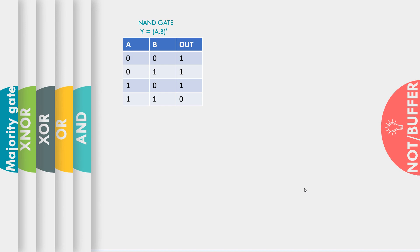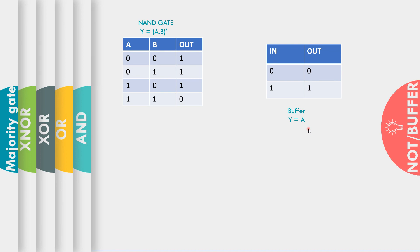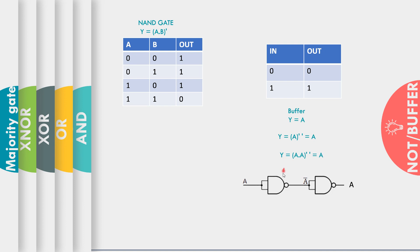Next we'll see how we can realize our buffer gate using NAND gate. A buffer gate latches the input as it is to the output, so our output will be the same as input — that is Y equals input signal A. If we apply two NOT gates, the first NOT gate will cancel the effect of the second NOT gate, so A double-bar is the same as A. Our buffer can be realized by connecting two NOT gates back to back, and since NOT gate can be realized using NAND gate, connecting two NAND gates back to back gives us the buffer.